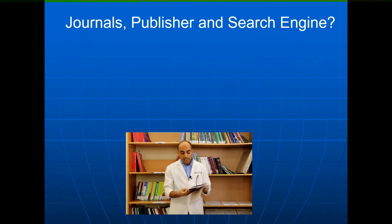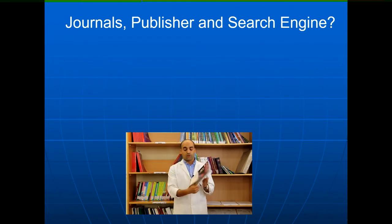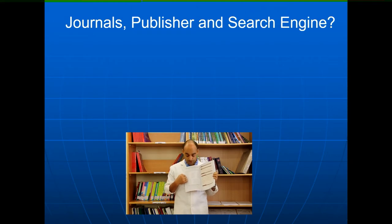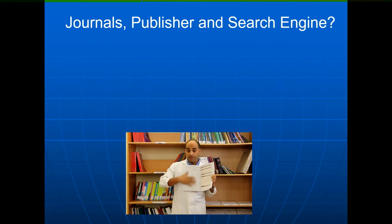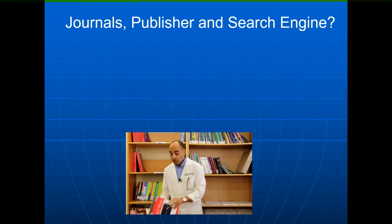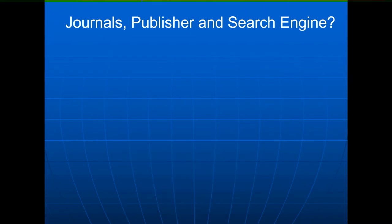If you go to any journal and flip to the first page, you will find the editorial board of the journal — the editor-in-chief, associate editors, reviewers, and editorial board coordinator. Those are the team of experts of the journal.